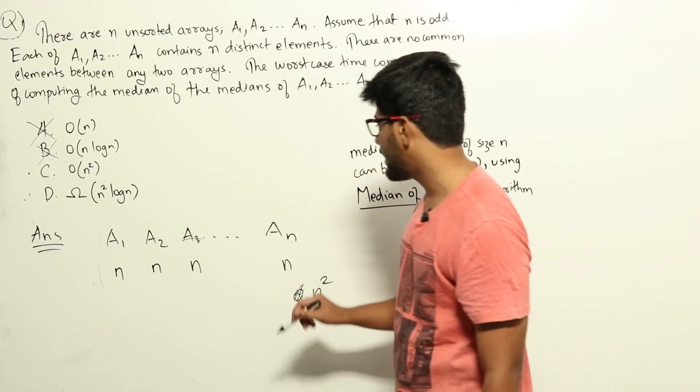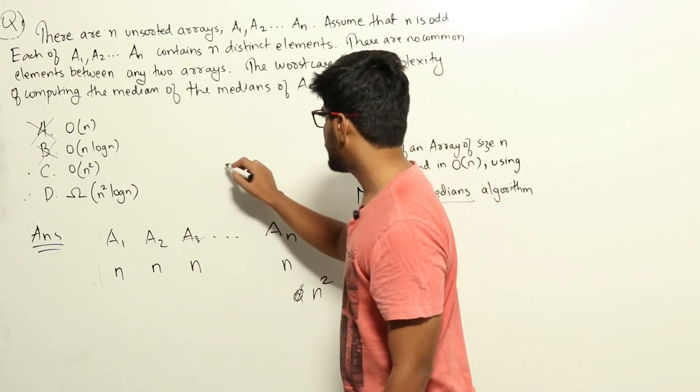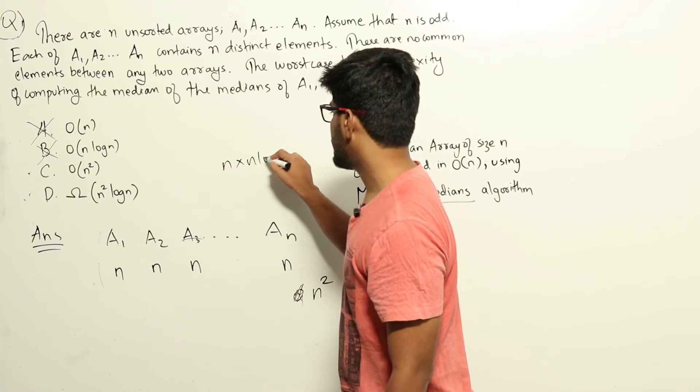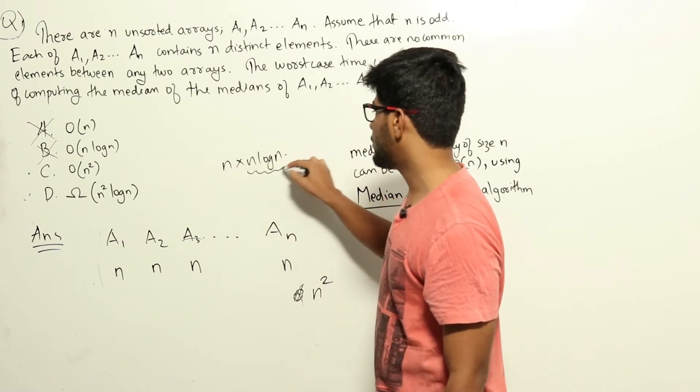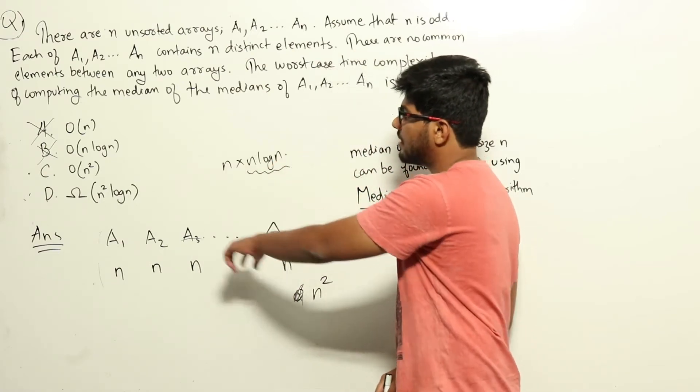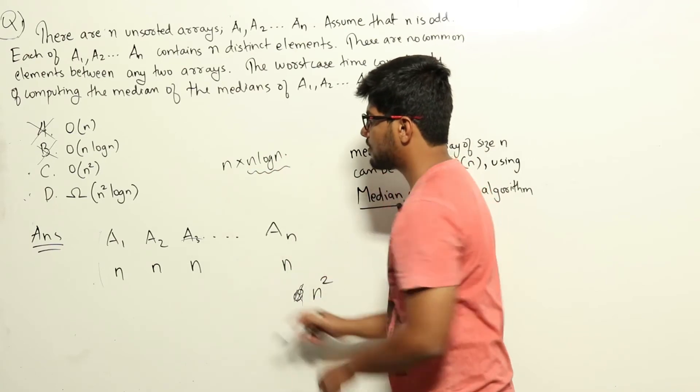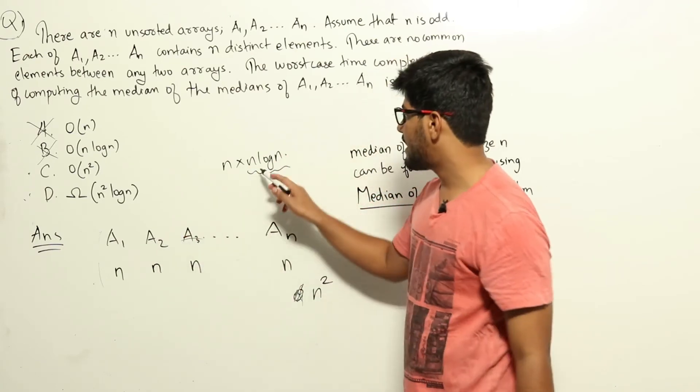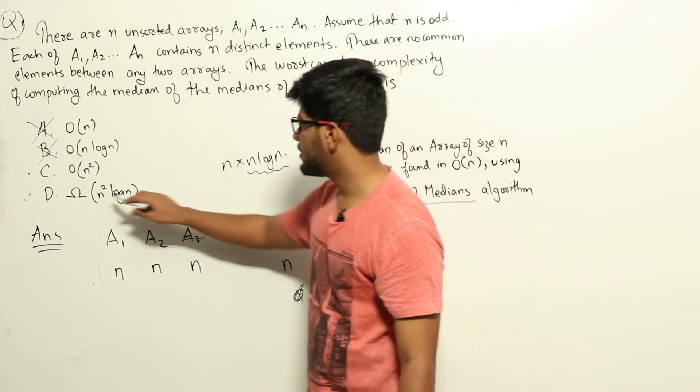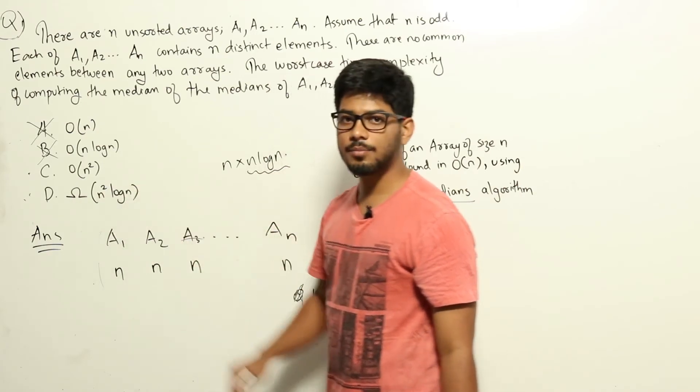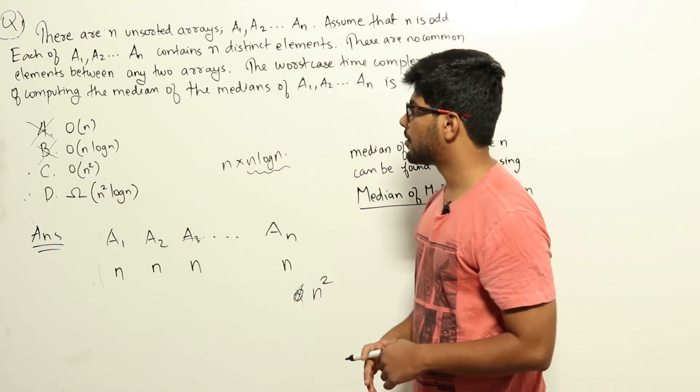Now, if you are sorting each of these and finding the median, the total time complexity would be n into n log n. n log n is for sorting each array and finding the median and n into this because we are doing it for n arrays. If that is the algorithm we are using, it will take n square log n time in order to do this problem.